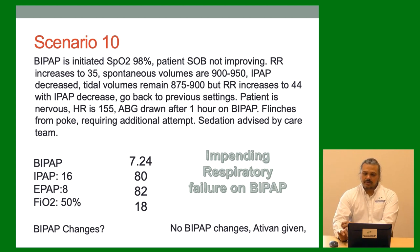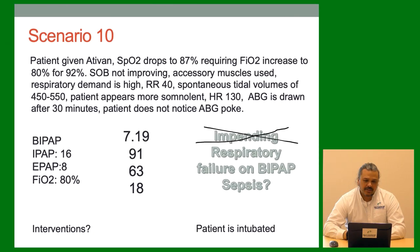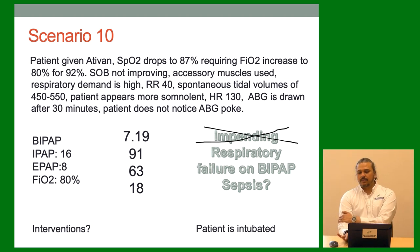He's impending respiratory failure on BiPAP — ventilating but needs more, still only blowing off CO2 to 88. He's septic. Ativan is given. SAT drops to 87, FiO2 increased to 80%. Shortness of breath not improving, still working hard, breathing like a freight train, respiratory rate 40. Patient appears more somnolent, heart rate 130. ABG at 30 minutes: patient didn't even notice the poke this time. Gas: 7.19 / 91 / 63 / 18. Starting to fail — now respiratory failure, not impending. We have to intubate. Septic, high demand — probably should have intubated in the first place but we gave him a shot.